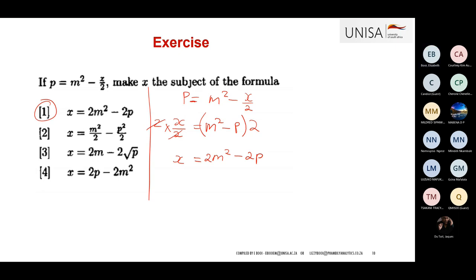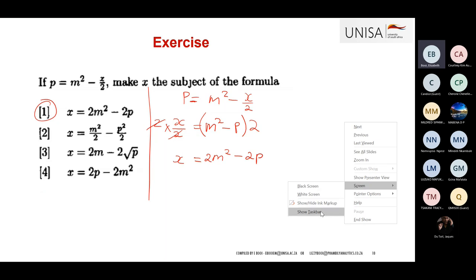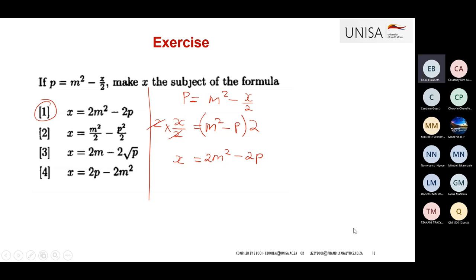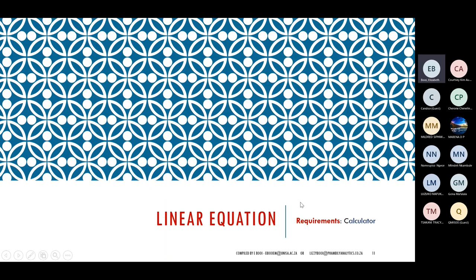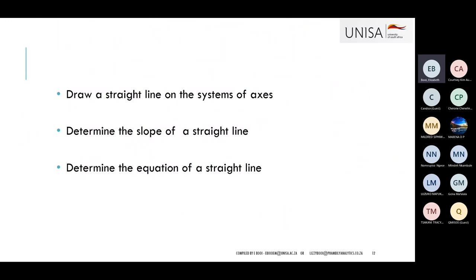Any questions? — Very clear. Good. Now we're going to look at how we manipulate linear equations. Linear equations are your straight lines. You should be able to draw a straight line based on the linear equation, calculate the slope, and determine the equation of a straight line. To draw a straight line you just need two points, and a point is made up of two coordinates.